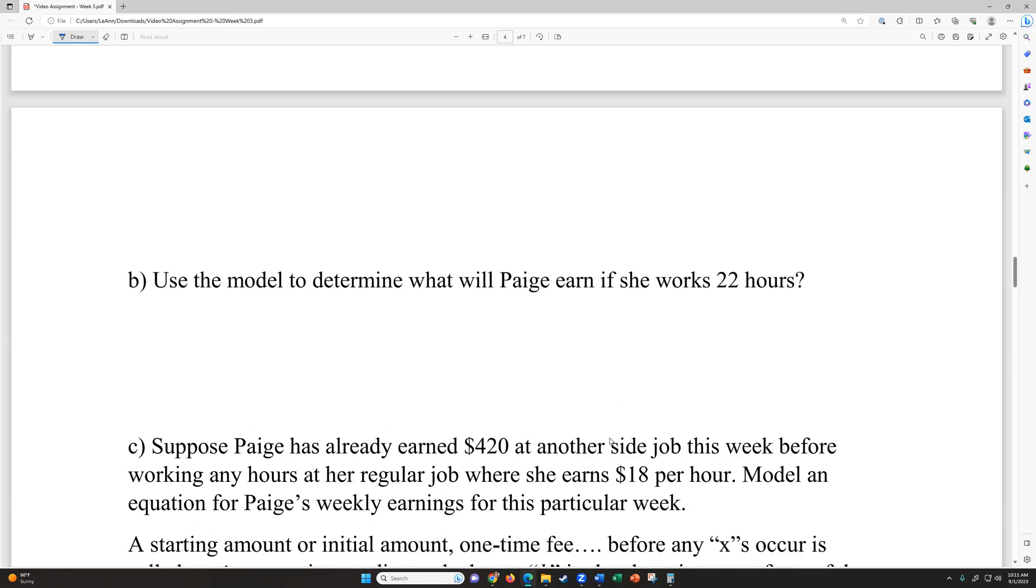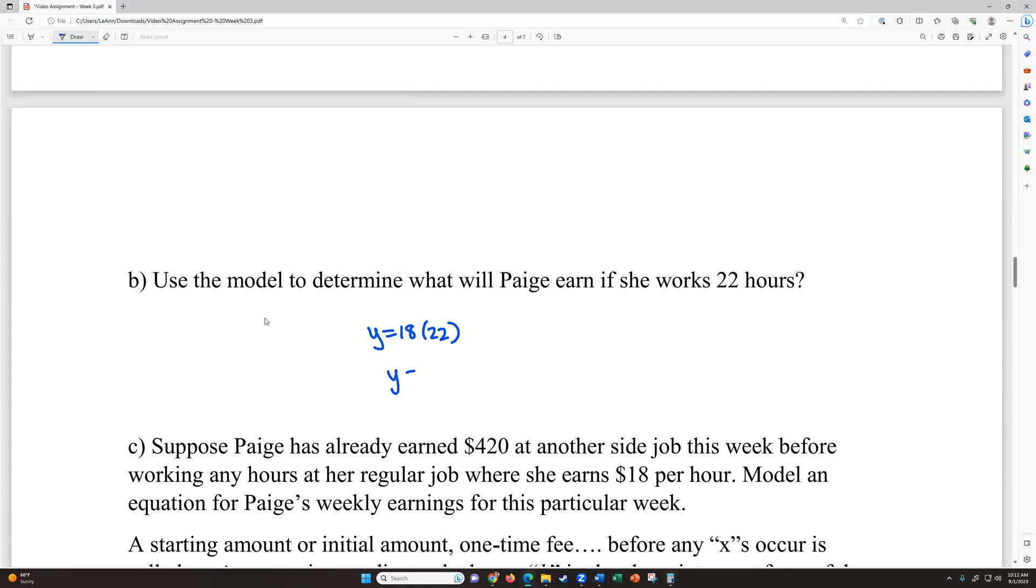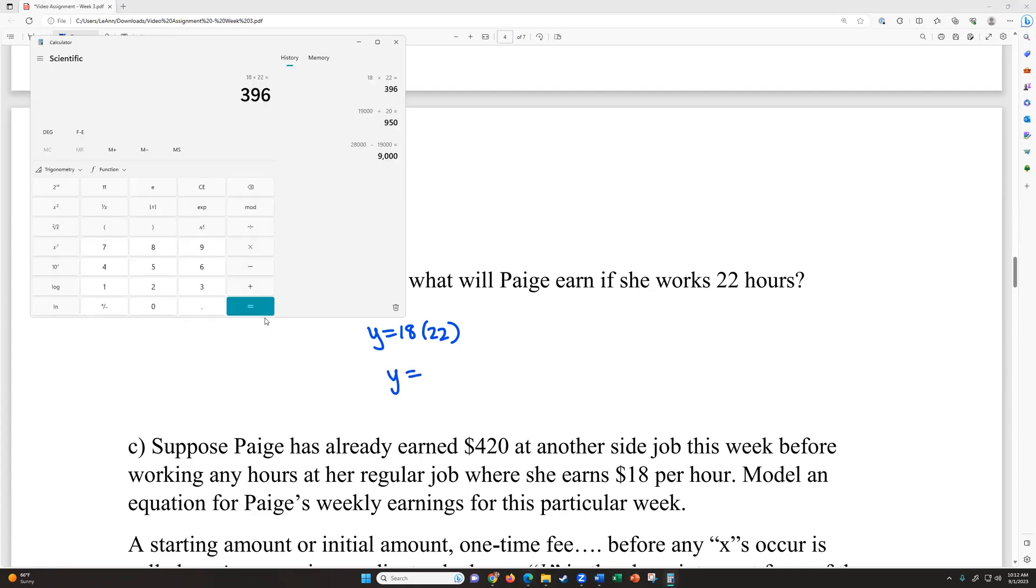Use this model to determine what Paige will earn if she works 22 hours. So if she works 22 hours, it's 18x. We're going to write 22 in for hours. Remember, x was how many hours does she work. Then we're going to figure out her paycheck for that amount of time. So she's going to get $396.